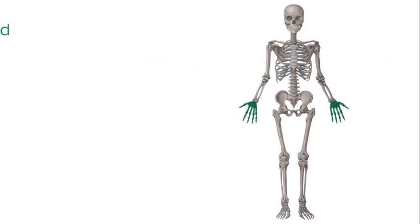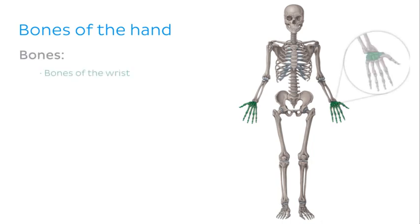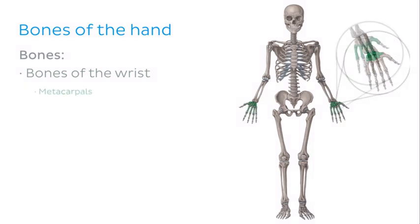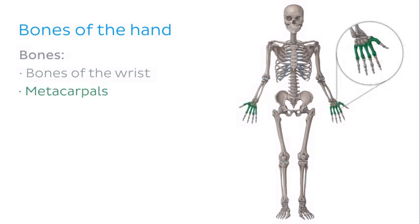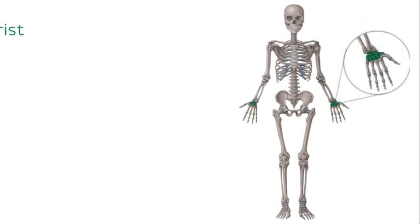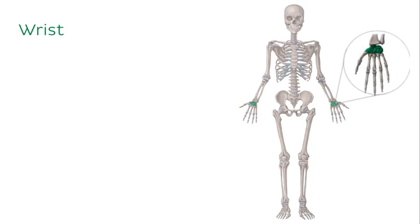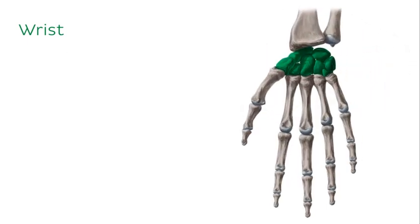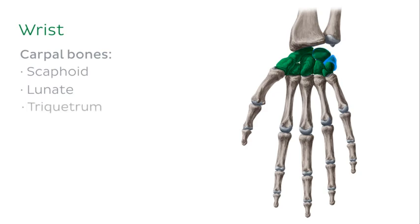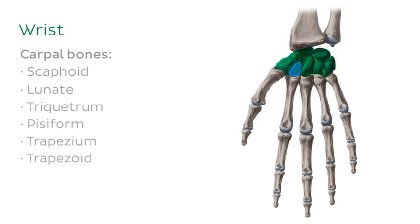Now let's move on to the bones of the hand. The hand is comprised of a number of bones: the bones of the wrist, the metacarpals and the bones of the fingers, otherwise known as the phalanges. The wrist is made up of the carpal bones or carpals. These include the scaphoid, the lunate, the triquetrum, the pisiform, the trapezium, the trapezoid, the capitate and the hamate.